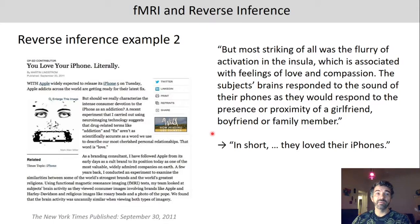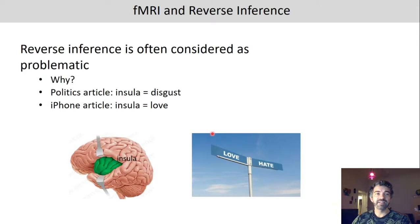You might already see a contradiction here, because in one study the insula was used as a measure of disgust, and in the other it was used as a measure of love. So how can this be? Well, the problem is that the insula is not very specific. In the politics article, the insula was associated with disgust, and in the iPhone article the insula was associated with love — and that is not necessarily wrong, because the insula was shown to be involved in a variety of emotions.